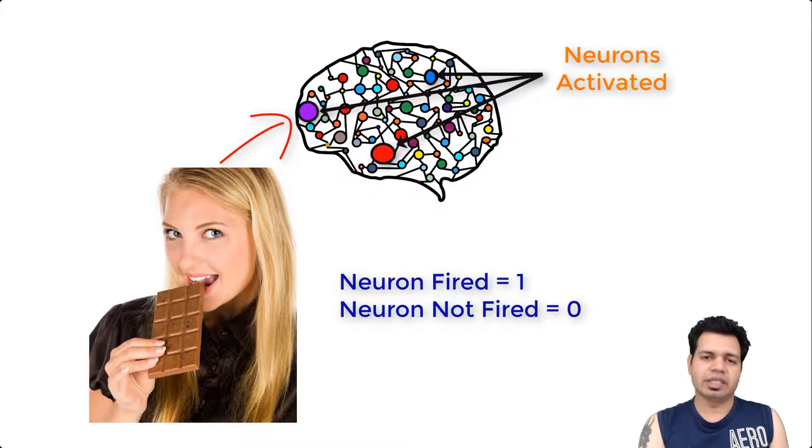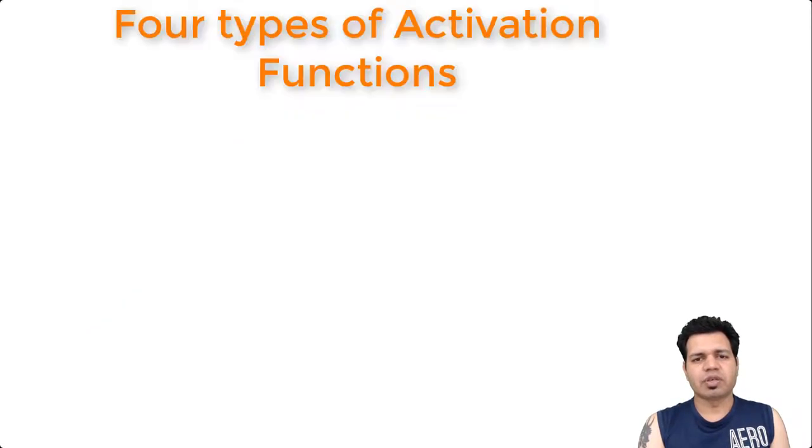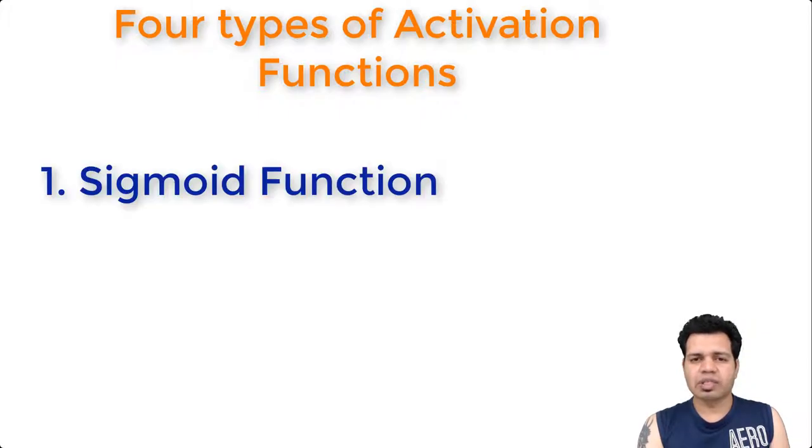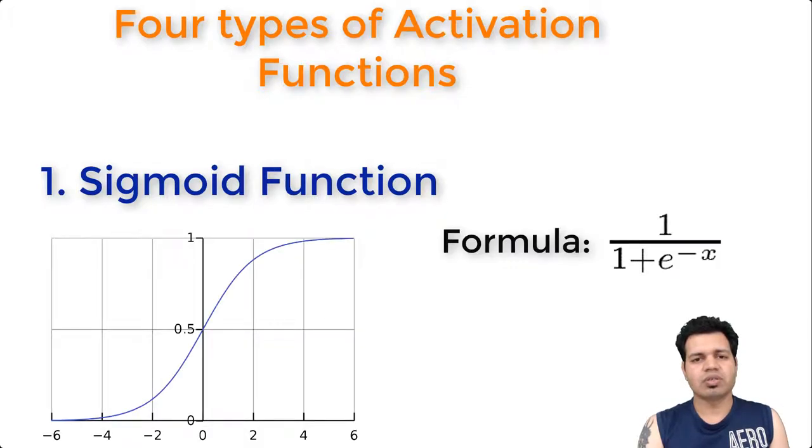Now let me cover four different types of activation functions which are widely used in building artificial neural networks or other different types of neural networks like convolutional or recurrent neural networks. Number one in the list is sigmoid or logistic function. Let's first visualize the sigmoid function. Here you can see this sigmoid function. Sigmoid function is a function which has a lower limit of 0 and upper limit of 1.